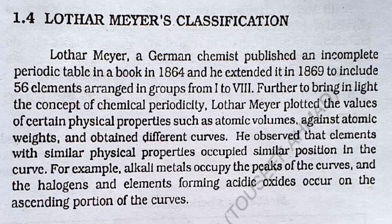What was the classification scheme? First of all, the information is important. There are 56 elements in total, which were arranged into groups — a total of 8 groups were made. Lothermeyer made a graph of physical properties against atomic weights.